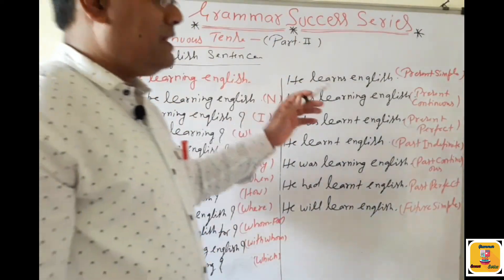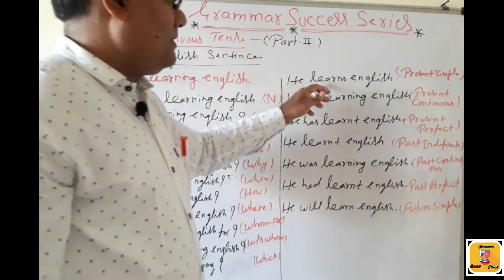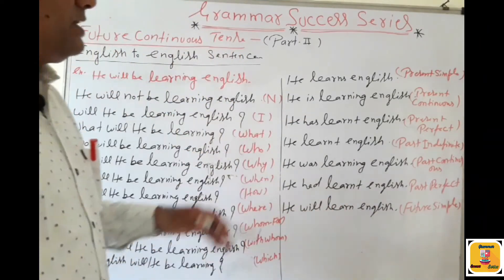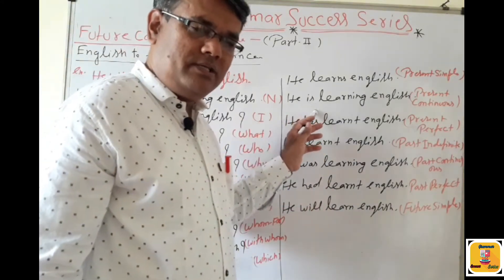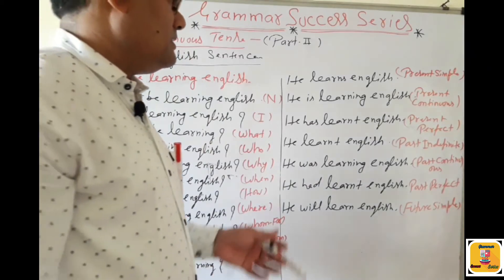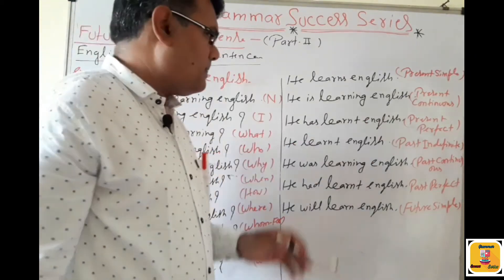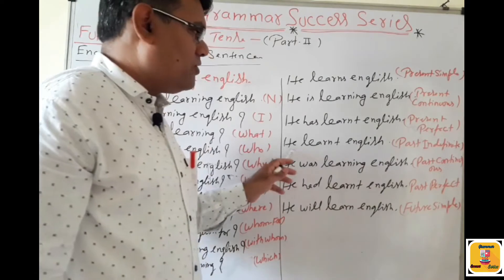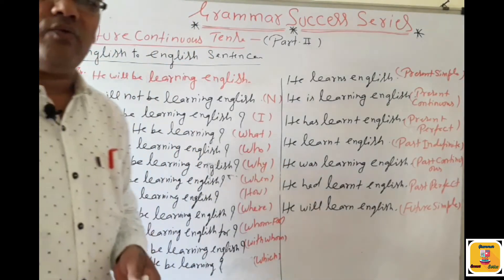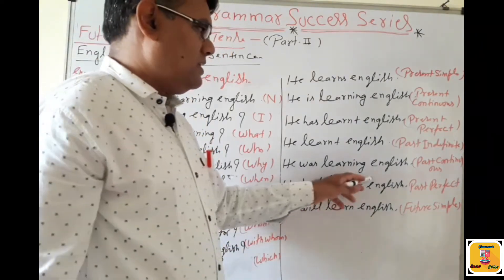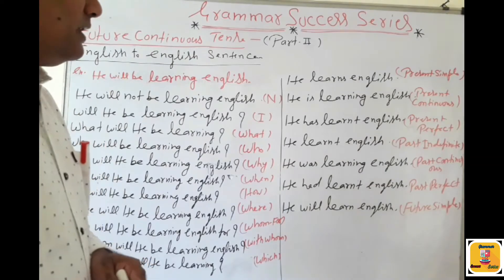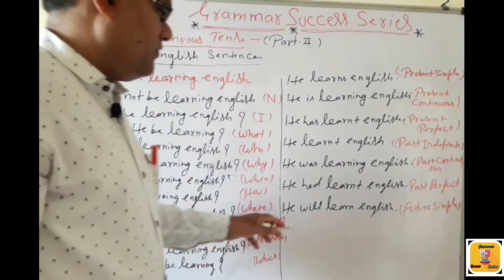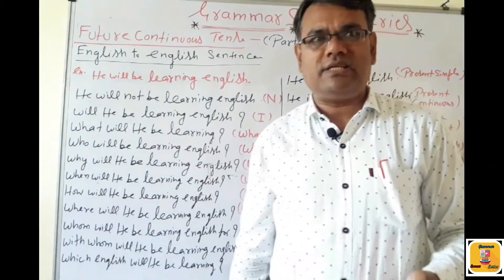Now changing the sentence across tenses. Present Simple: 'He learns English' — because 'he' is a singular subject, add -s or -es. Present Continuous: 'He is learning English.' Present Perfect: 'He has learnt English.' Past Simple: 'He learnt English.' Past Continuous: 'He was learning English.' Past Perfect: 'He had learnt English.' Future Simple: 'He will learn English.'